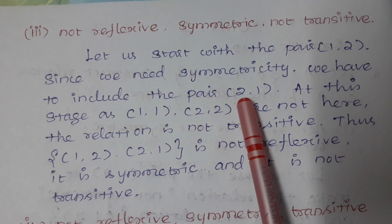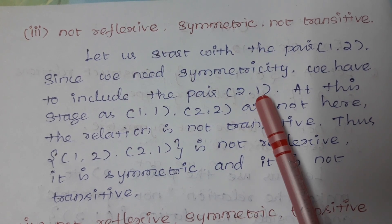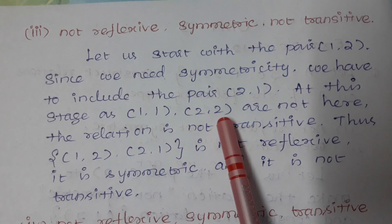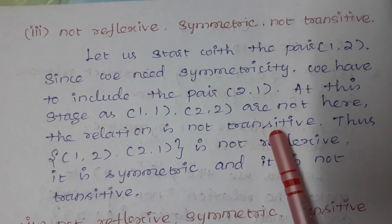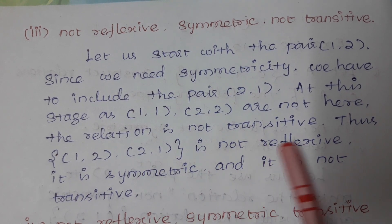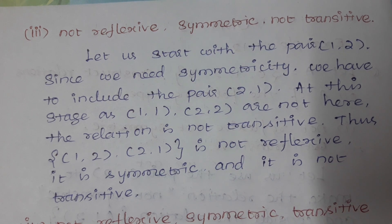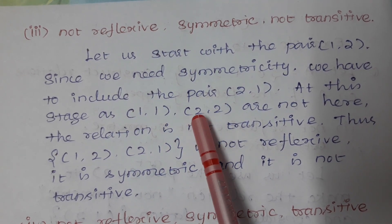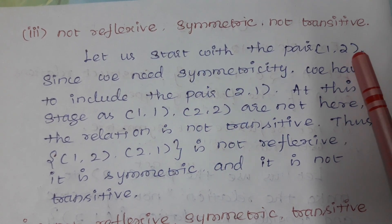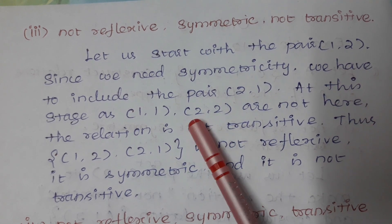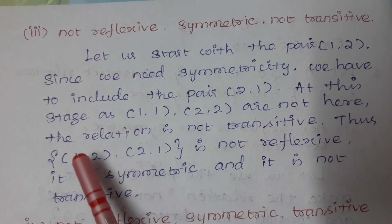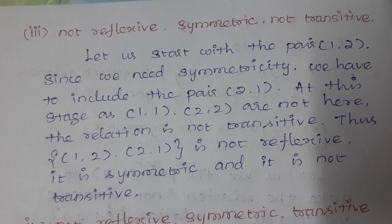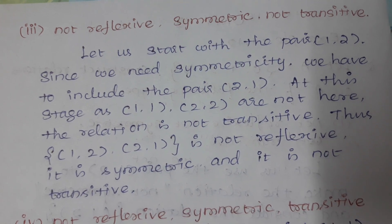Since we need symmetric, we have to include the pair (2,1) along with (1,2). So (a,b) and (b,a) — that is symmetric. And (1,1) and (2,2) are not here, so this relation is not reflexive. Therefore it is not transitive.